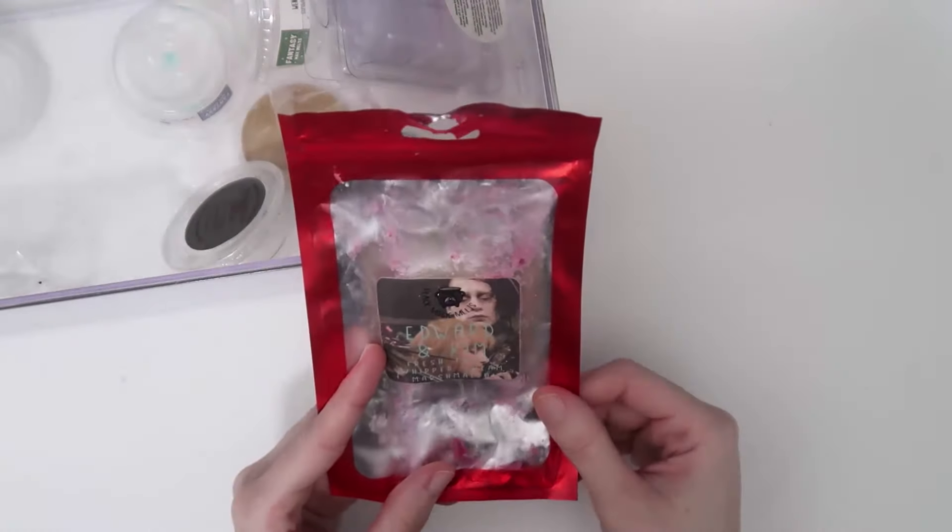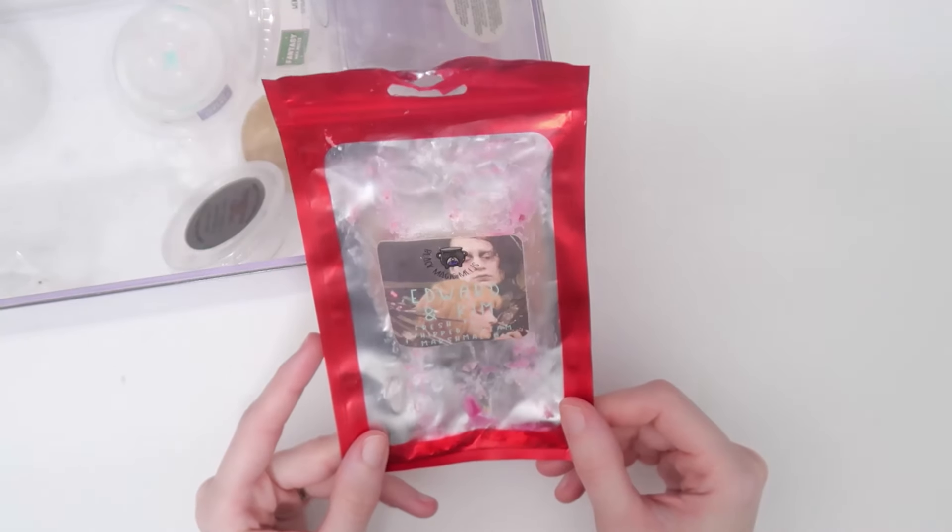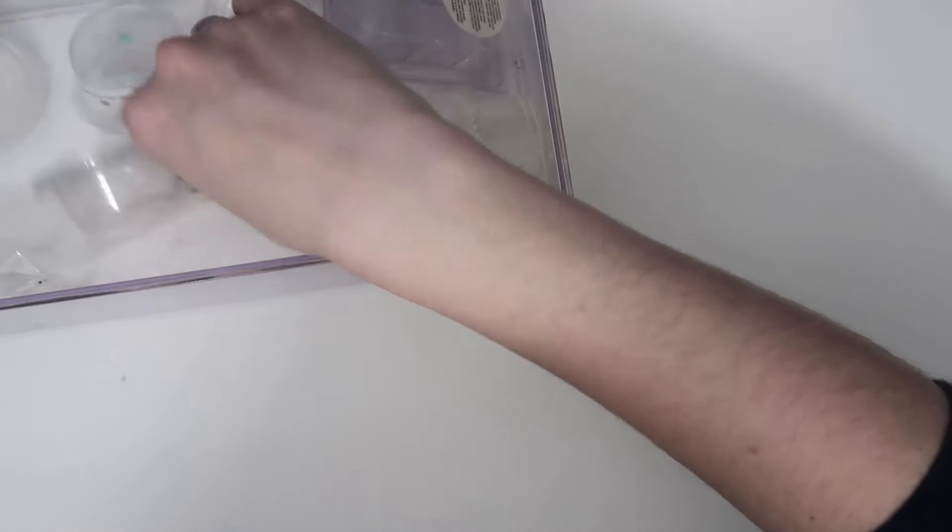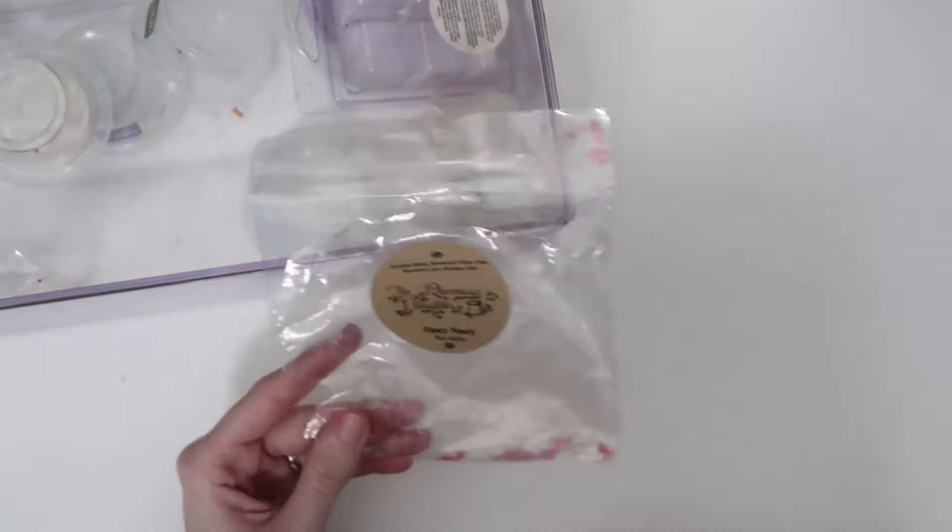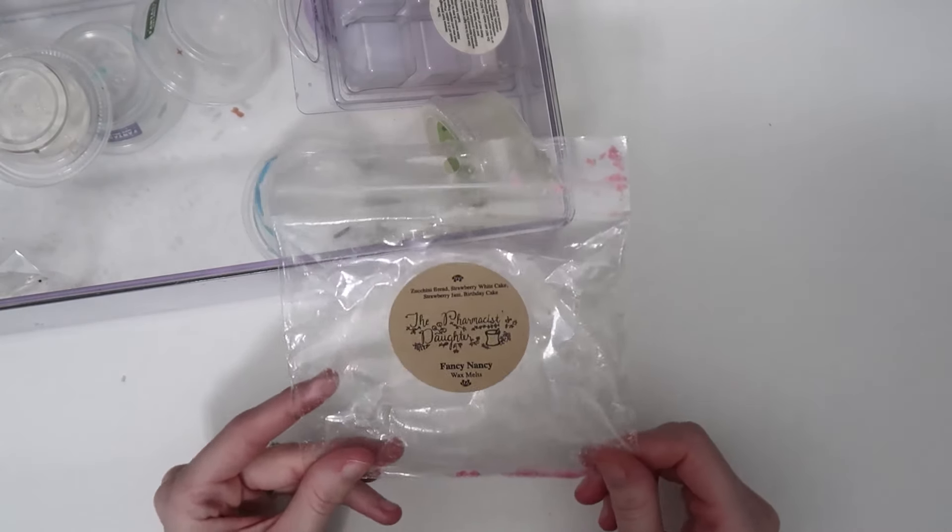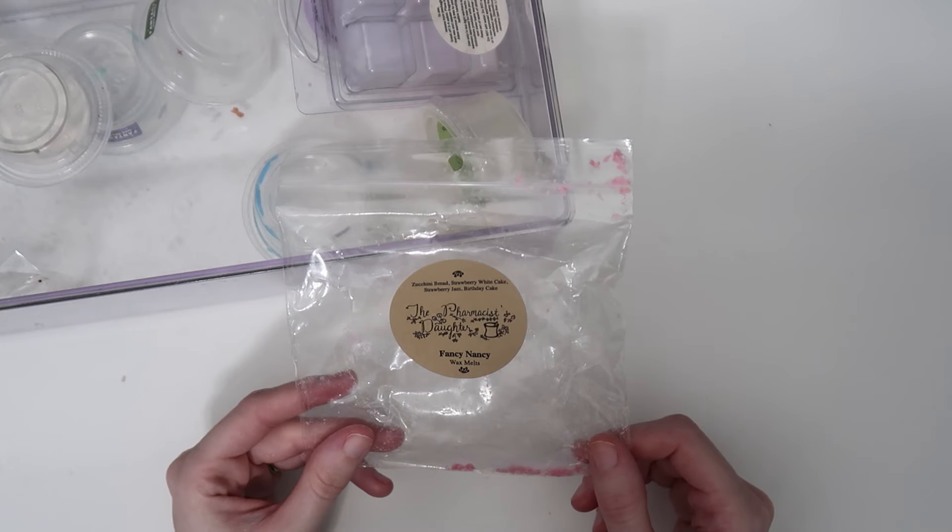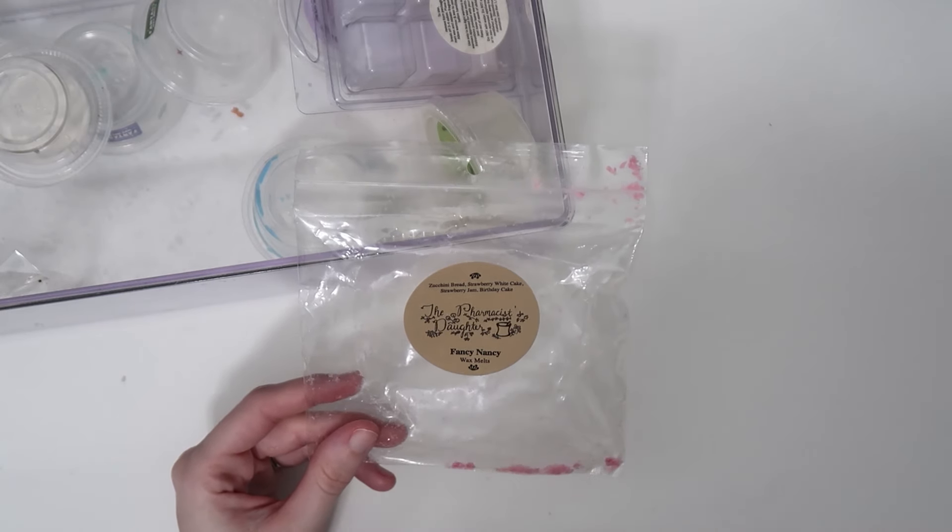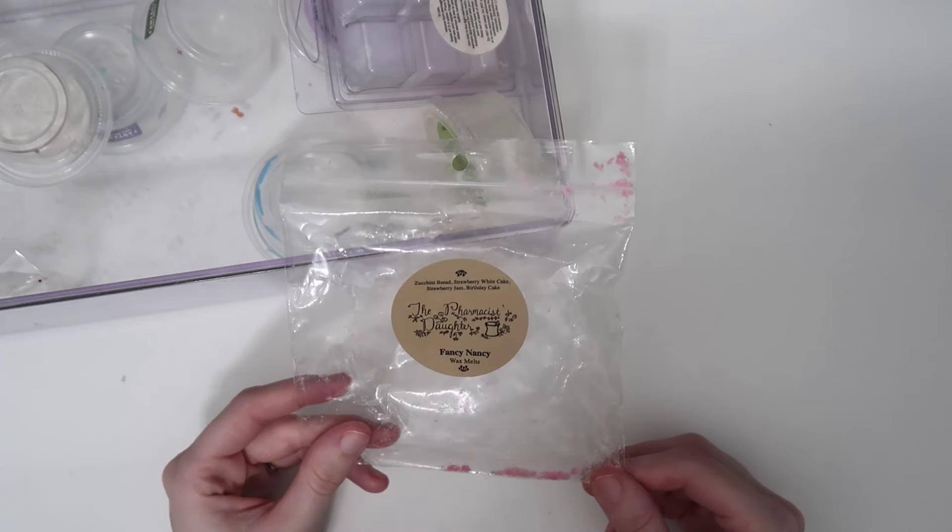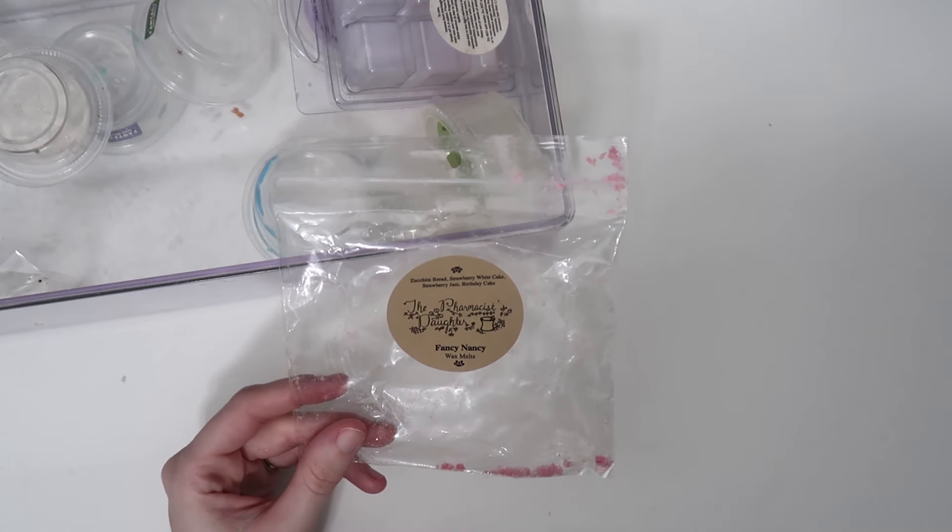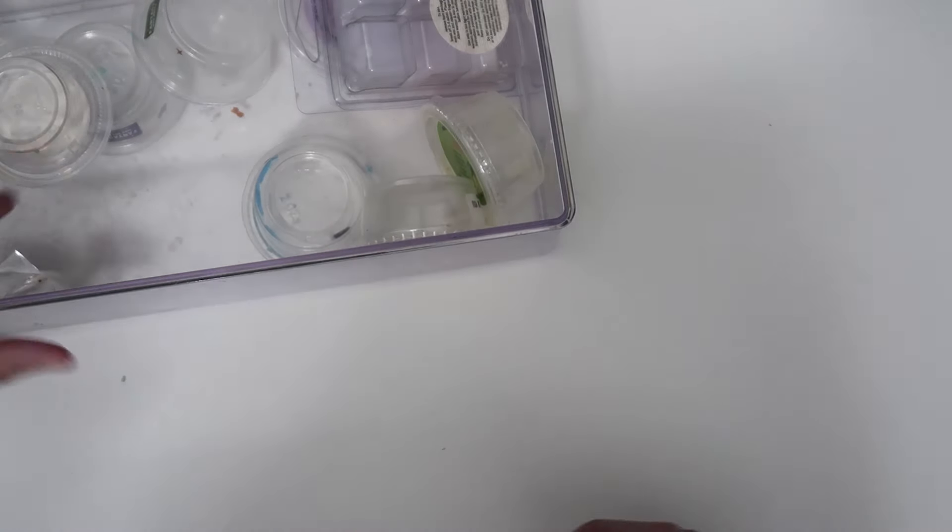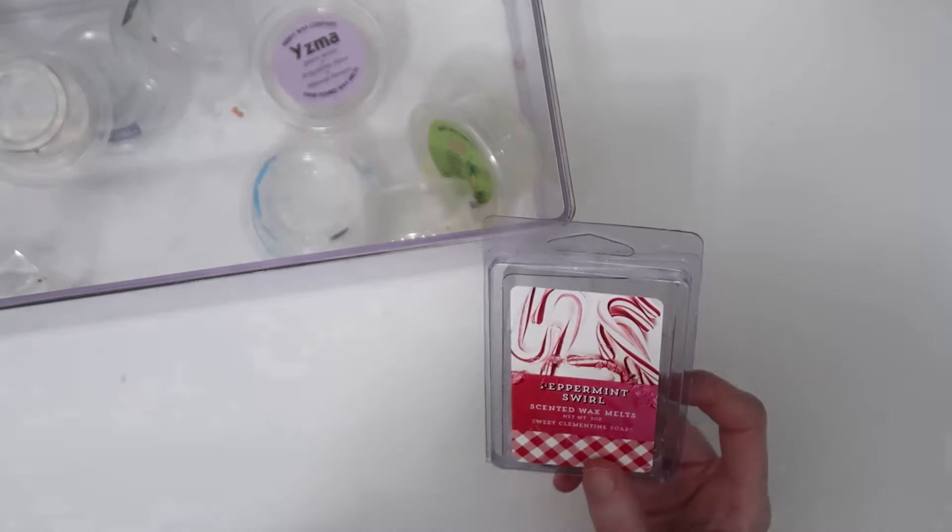From Black Magic Melts this was Edward and Kim - fresh fruit, whipped cream, and marshmallow. This was very sweet, very nice. Another bag from The Pharmacist Daughter, a Fancy Nancy souffle - zucchini bread, strawberry white cake, strawberry jam, and birthday cake. This was very good. I love the strawberry white cake, such a good scent note. I love it mixed with zucchini bread. The additional notes of strawberry jam and birthday cake really elevated this scent.